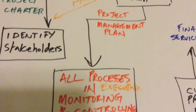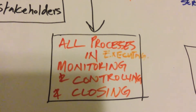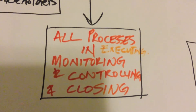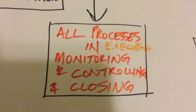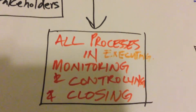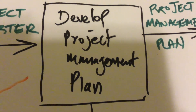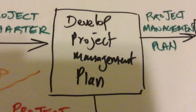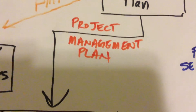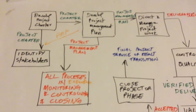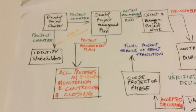We've got the project management plan going into all processes in executing, all processes in monitoring and controlling, and all processes in closing. The only two places where the project management plan does not go are the developed project management plan process itself and the developed project charter process. Apart from those two, all the other 49 processes will get the project management plan, including identify stakeholders. So there is the big map of the world of deliverables.